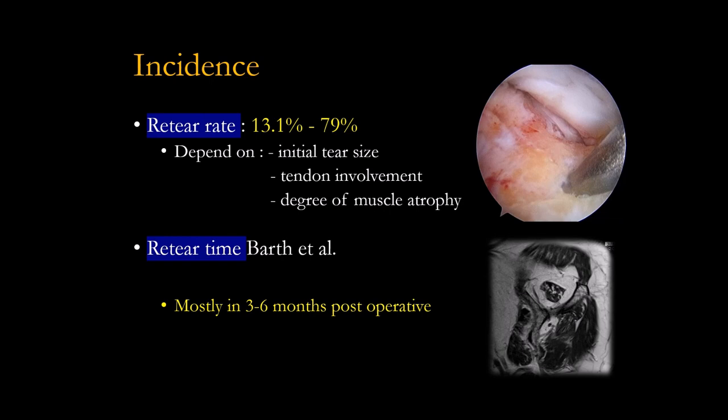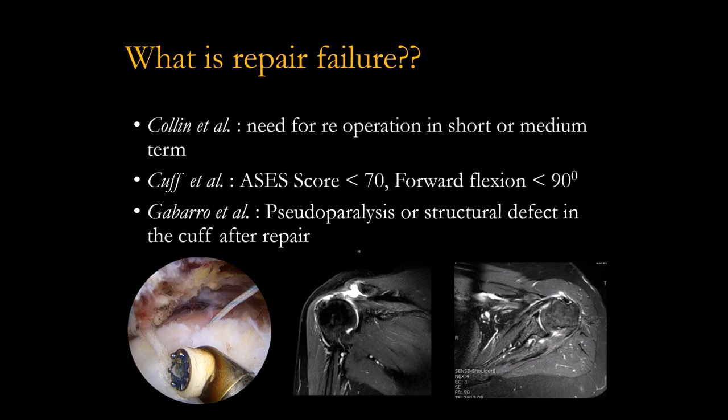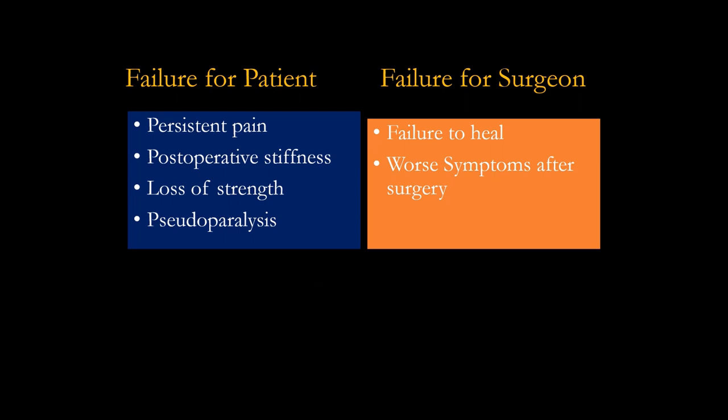Re-tear typically happens between three to six months after surgery. The incidence of re-tear depends on tear size — if you have a small tear, it's about 10%, but a large tear over six centimeters can have a re-tear rate up to 50%. Repair failure is defined by Dr. Colin as needing re-operation in the short or medium term, having an ES score less than 70, or having pseudo-paralysis after surgery.